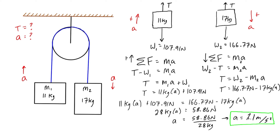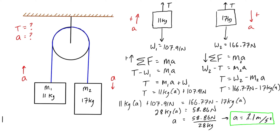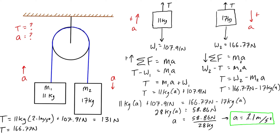To find tension, substitute a = 2.1 m/s² back into either expression. Using the first: T = 11 × 2.1 + 107.91 = 131 newtons. Checking with the second: T = 166.77 − 17 × 2.1 = 131 newtons. Both give the same answer, confirming our work. Tension in the cable is 131 newtons and acceleration is 2.1 m/s².